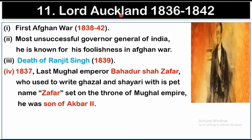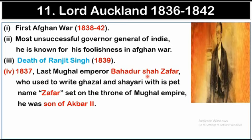The eleventh Governor-General was Lord Auckland, whose tenure was from 1836 to 1842. During his tenure, the First Afghan War was fought between 1838 and 1842. He is also known as the most unsuccessful Governor-General of India because of his policy against the Afghans. The death of Ranjit Singh occurred in 1839 during his tenure. An important event in 1837 was that the last Mughal Emperor of India, Bahadur Shah Zafar, who wrote Ghazals and poetry with the pen name Zafar, sat on the throne of the Mughal Empire. He was also the son of Akbar II.